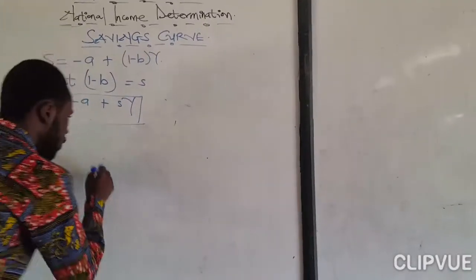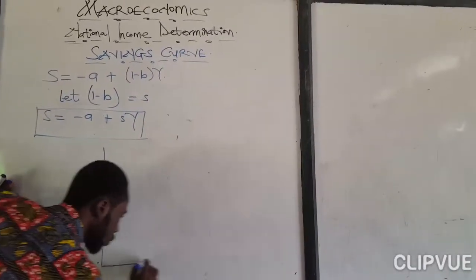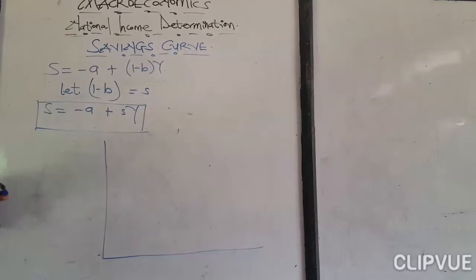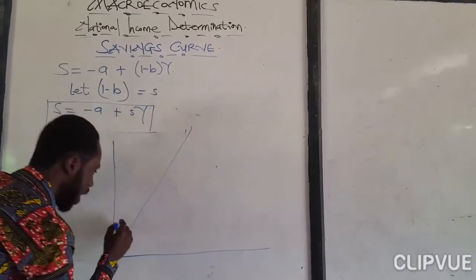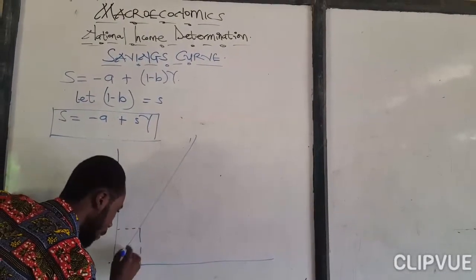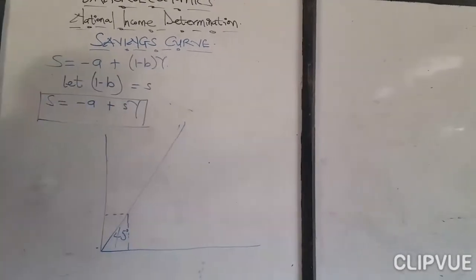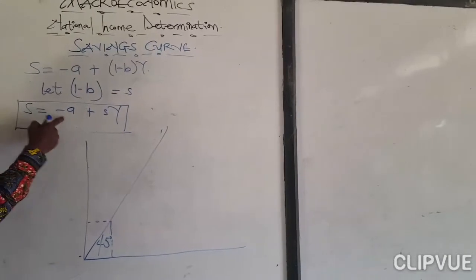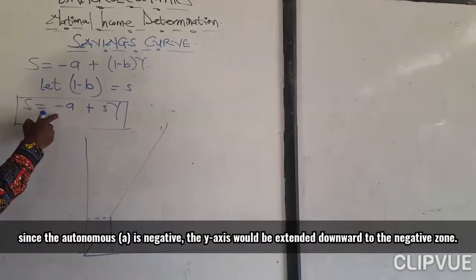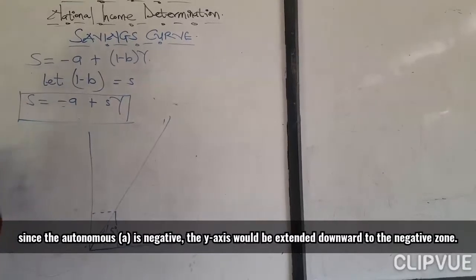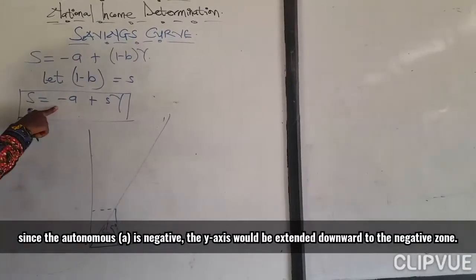So this is how the savings curve is going to be. The savings curve is going to be like this. Here is my 45 degrees line. But look at it, the autonomous savings over here is negative.